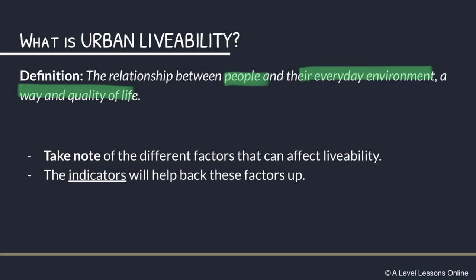You need to know your indicators. In urban livability, indicators essentially work like your examples. When you quote examples, you're basically going to quote that the indicator has shown a certain set of results, which is why this is a factor that has affected livability. Indicators will be covered in the next video — I'll leave a link in the top right corner of the screen and down below. They are basically your examples for this topic.